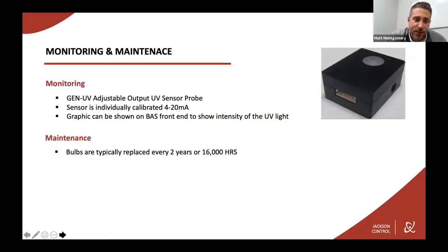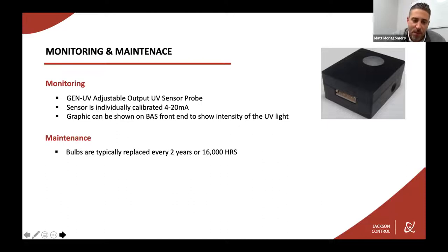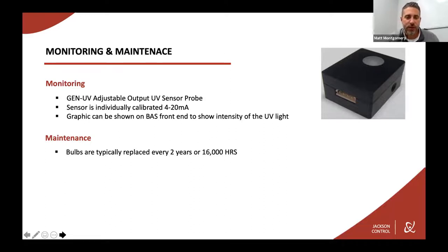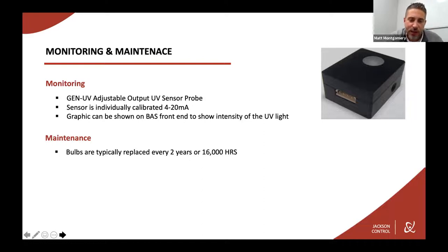Beyond deploying UVC, there's monitoring and maintenance. We have a device called the GenUV where we can monitor the intensity of the UV light and bring it into a BAS front end to display a graphic on UV light intensity for maintenance purposes. The sensors are individually calibrated for 4 to 20 milliamps. Regarding regular maintenance, the bulbs are typically replaced every two years or 16,000 to 18,000 hours, though that varies by manufacturer.